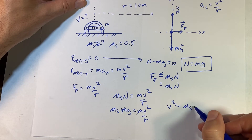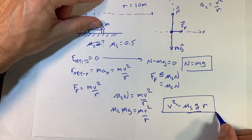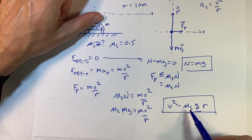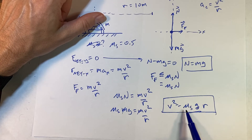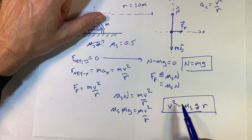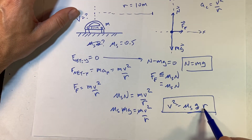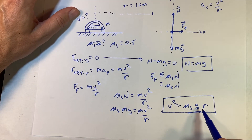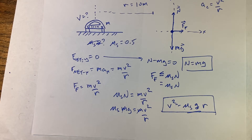Solving for v²: the masses cancel, giving v² equals μ_s times g times r. Let's do a quick unit check: meters per second squared times meters gives meters squared per second squared — good. Physically, if I increase the gravitational field there'd be more friction, so the car could go faster. If I increase the radius, I decrease the needed centripetal acceleration, so the car can go faster too.